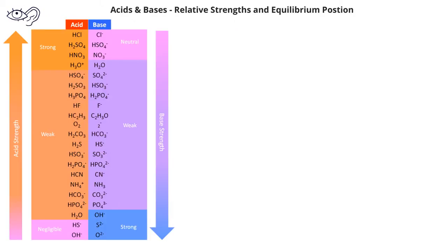In the previous problem, we saw a few different acids and bases, and so one of the questions that can naturally come up is: how do we know if an acid is going to be stronger or weaker than another acid? And how do we know if a particular base is going to be stronger or weaker than any other base? The figure here demonstrates that we can have relative acid and base strengths depending on where they fall on the table.